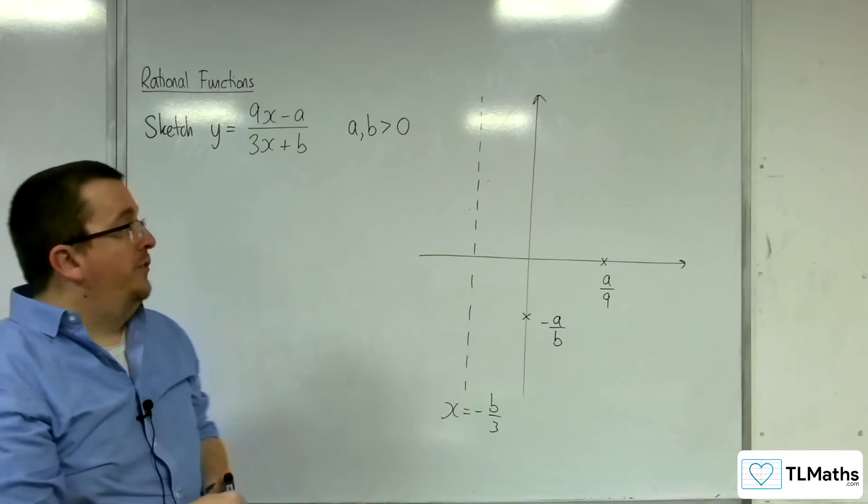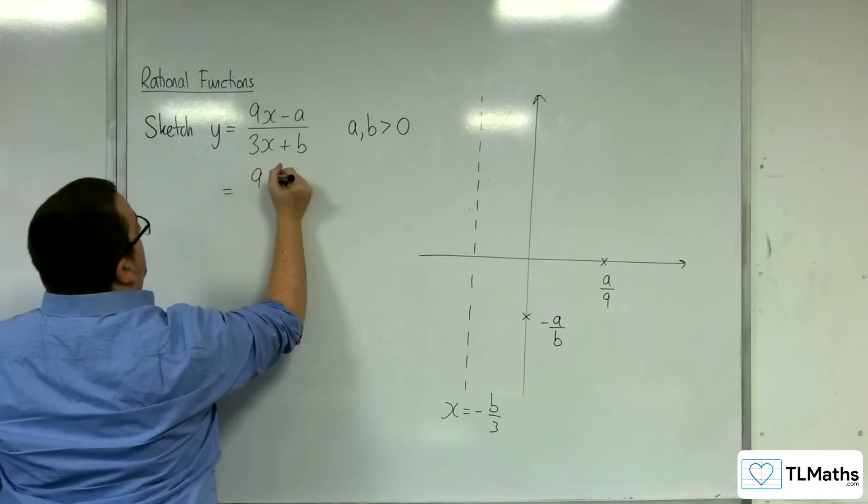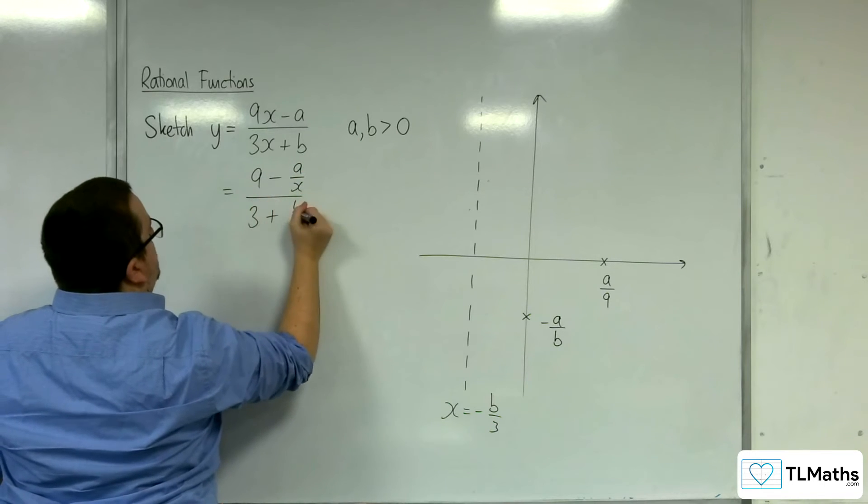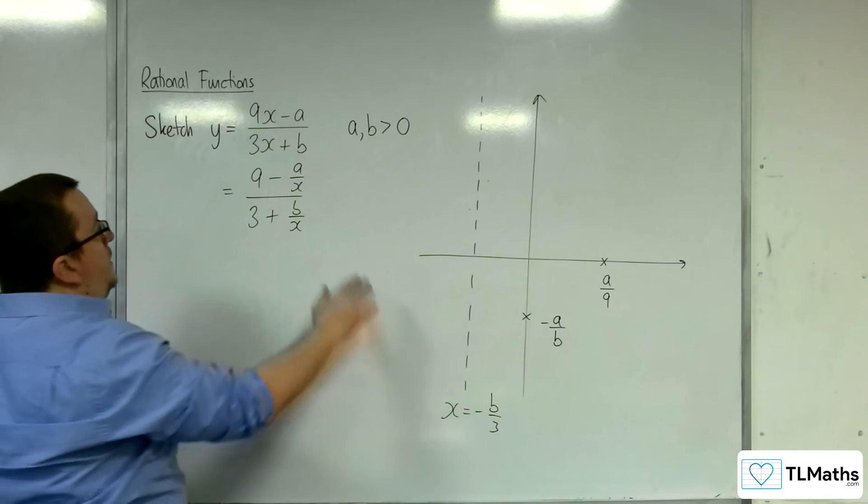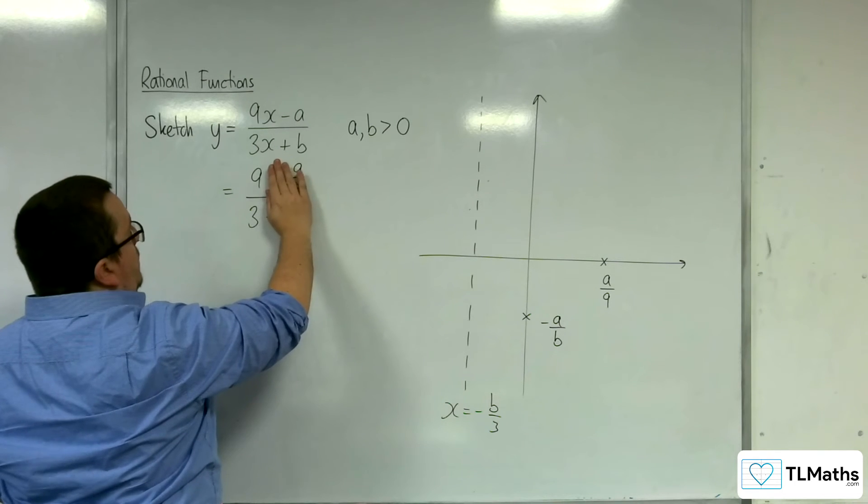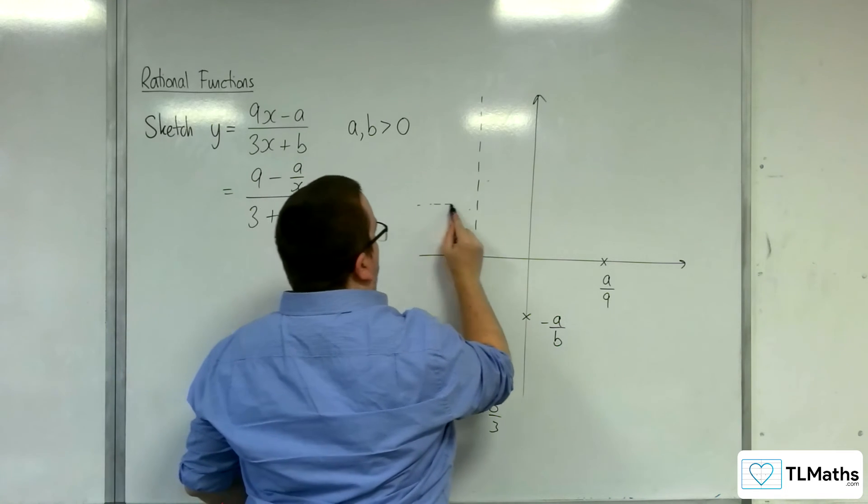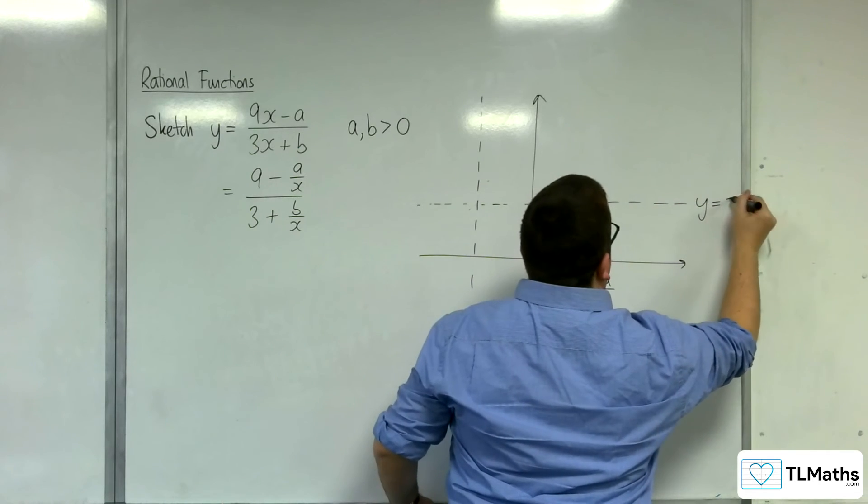And finally, where is the horizontal asymptote? Well, I'm going to divide top and bottom by x. 9 take away a over x over 3 plus b over x. And as x tends to infinity in either the positive or negative direction, these two fractions will tend to 0. And I'll get y equals 9 over 3. So y equals 3. So y equals 3 is a horizontal asymptote.